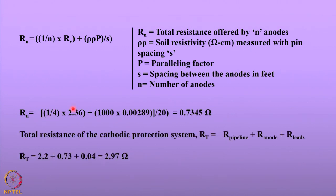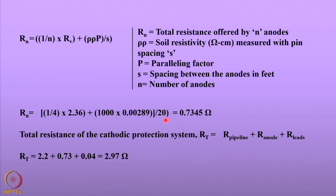Once we know the anode ground bed resistance, the total resistance of the cathodic protection system — consisting of pipeline, anode, and leads — is calculated. The pipe-to-soil resistance and lead resistance are known; the anode ground bed resistance has been calculated. The total resistance offered by the system is 2.97 ohms. Our next task is to determine whether the zinc anode can drive the current against this resistance.